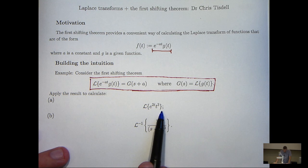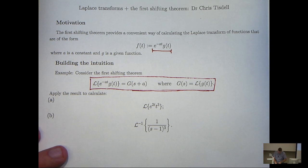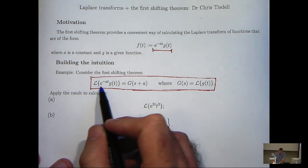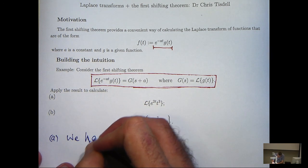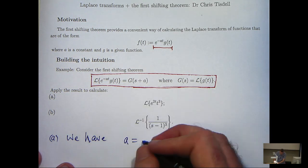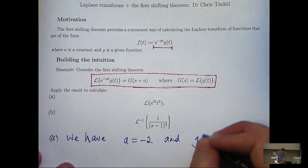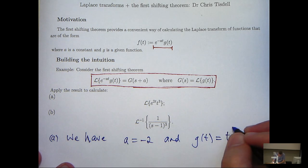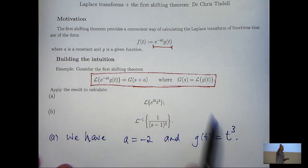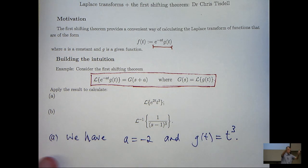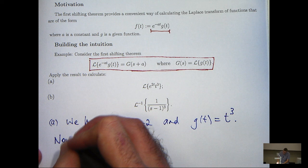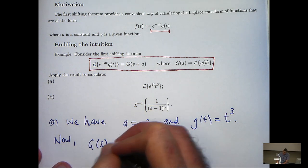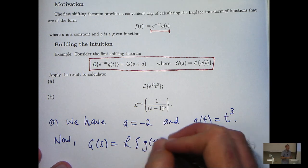Let's have a look at how to apply the first shifting theorem. Here we're asked to calculate the Laplace transform of e to the 2t times t cubed, using the first shifting theorem. The first thing we're going to do is compare this with the general form and identify a and little g. So a will be minus 2 and little g of t will be t cubed.